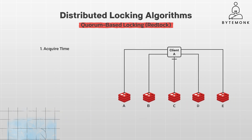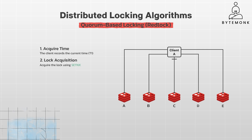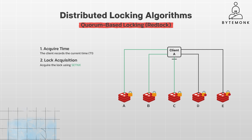During the lock acquisition phase, the client attempts to acquire the lock on each Redis instance using the SET NX command, with a lock key and a unique value such as its client ID. Each Redis instance responds with OK if the lock is acquired successfully, or NULL if it is held by another client. The client includes the lock validity time, or TTL, with each SET NX command to ensure that locks don't become stale if the client crashes.